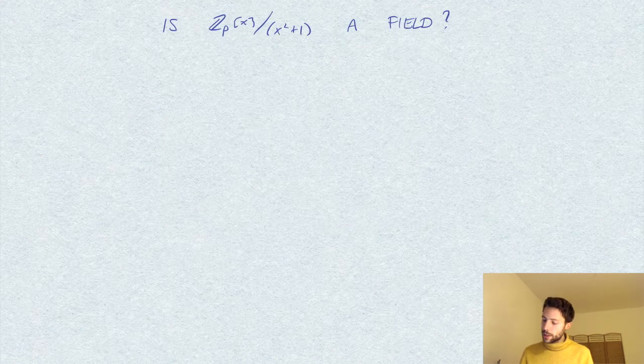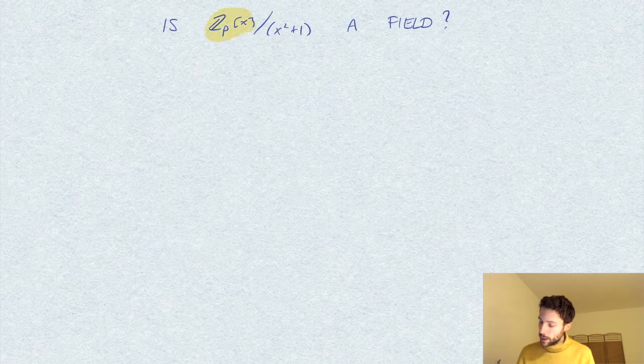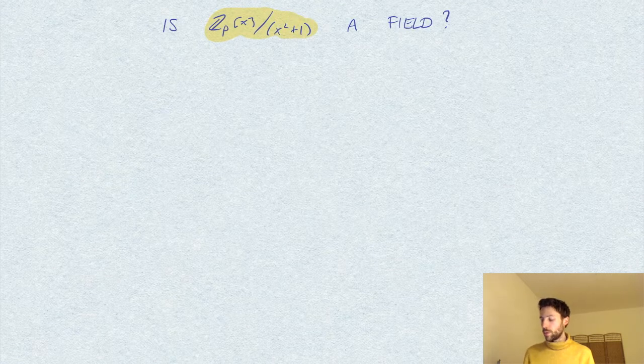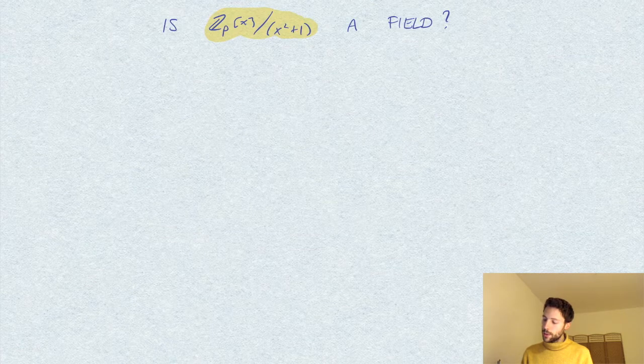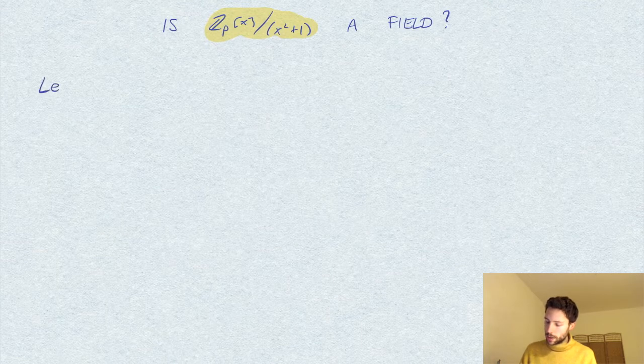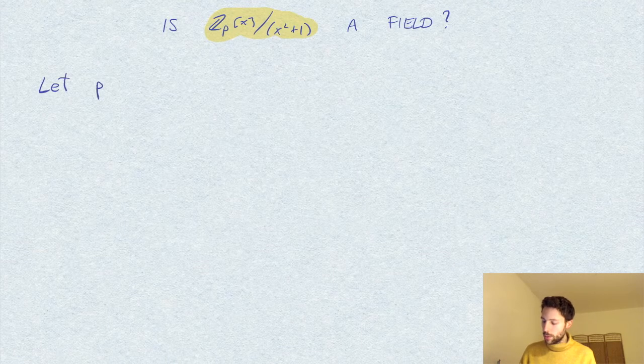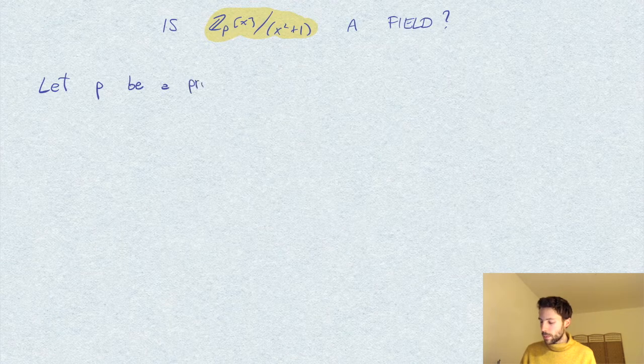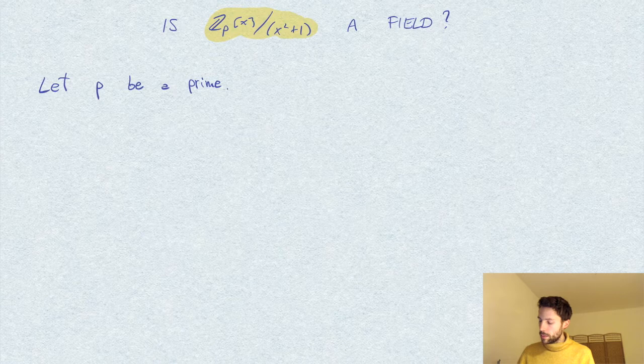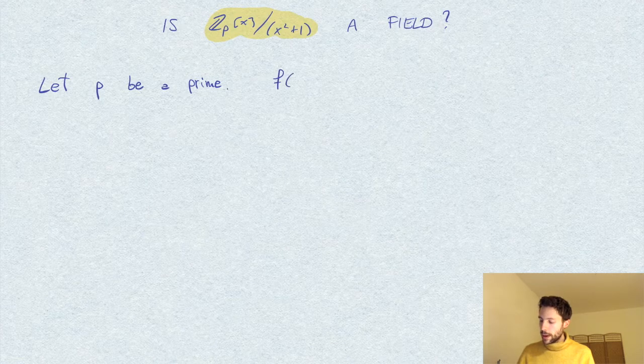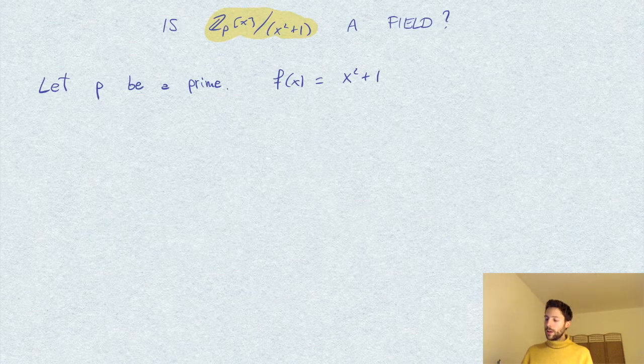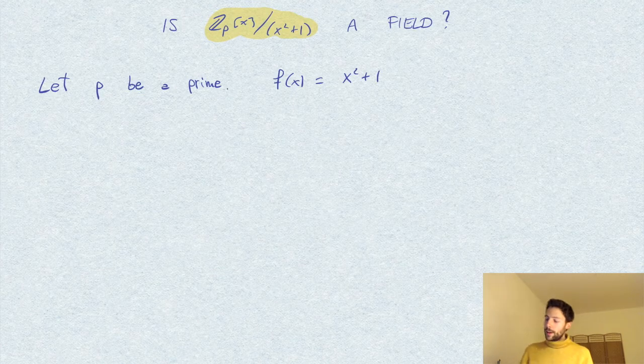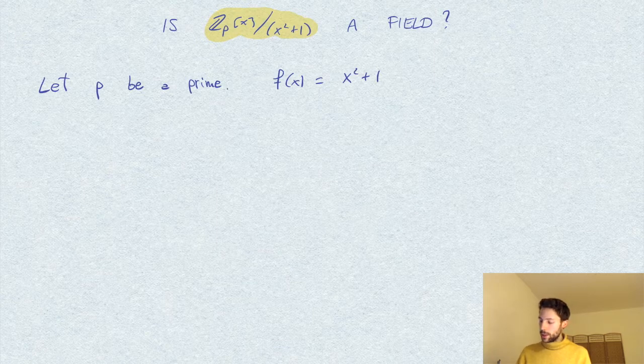Now I want to study some properties of this quotient ring here, Z_p[x], polynomials with one variable with coefficients in the ring of integers modulo p, Z_p, quotient by this polynomial. Let me state it formally: let p be a prime number and consider a polynomial f(x), the polynomial x squared plus one, so this polynomial has coefficients in Z_p.